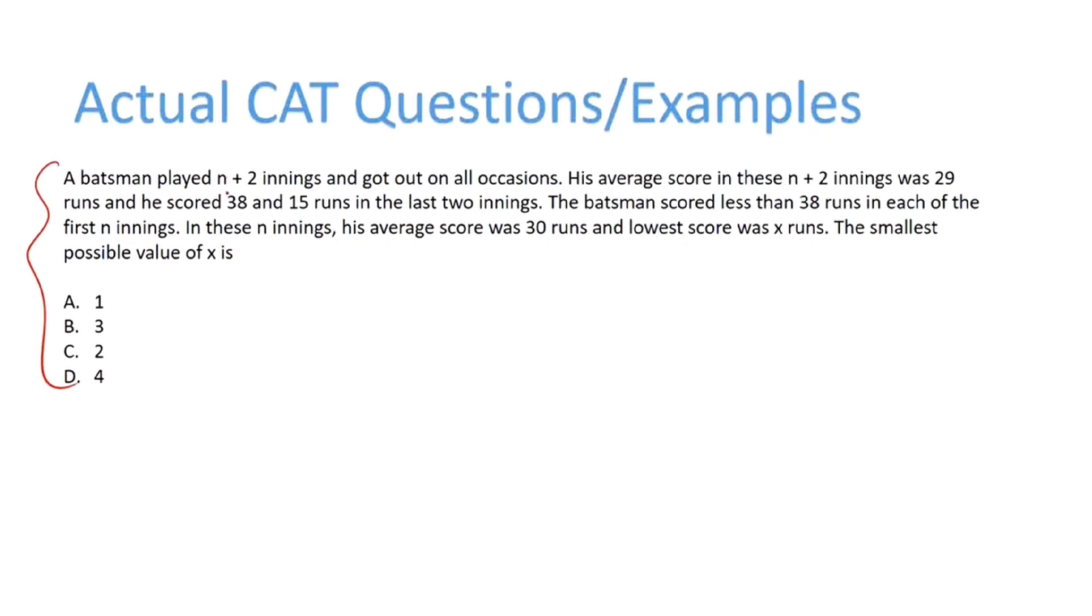Here, a batsman played n+2 innings and got out. His average score in these n+2 innings was 29, and he scored 38 and 15 in the last two innings.